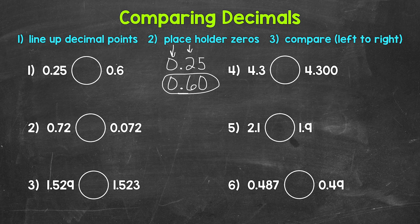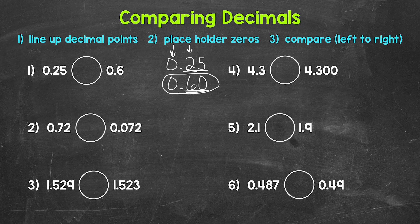We were able to compare these decimals based on the tenths place. Another way to think about this: since they both go to the hundredths place, we have 25 hundredths and 60 hundredths. 60 hundredths is greater than 25 hundredths, and since 60 hundredths is equivalent to 6 tenths, we know that 6 tenths is greater. Our comparison symbol always opens up towards the greater value, so we read this as 25 hundredths is less than 6 tenths.